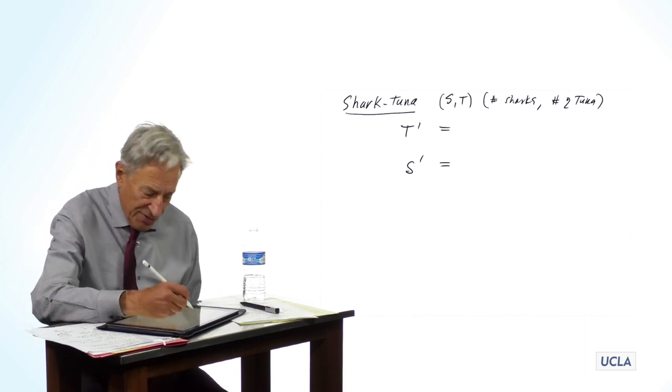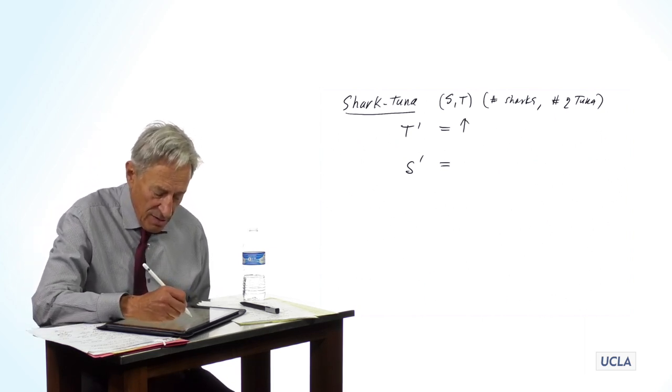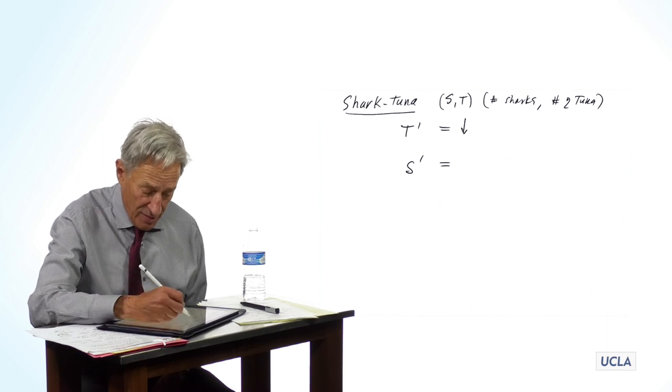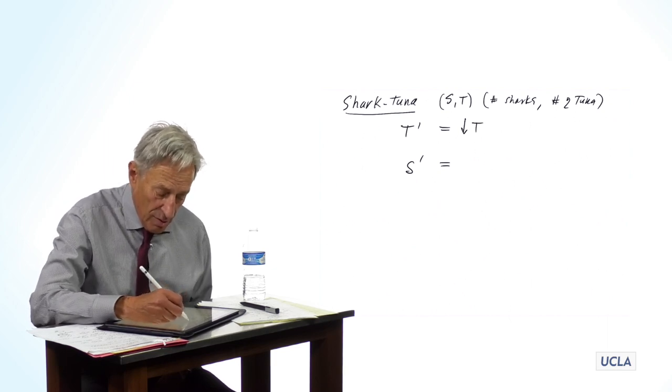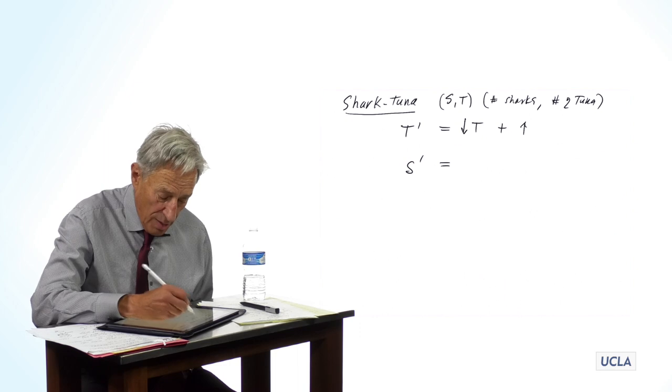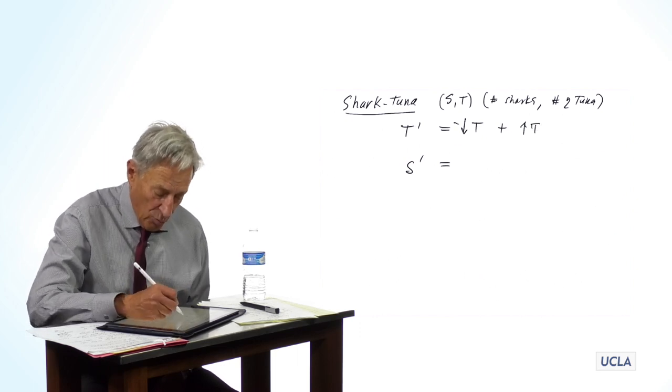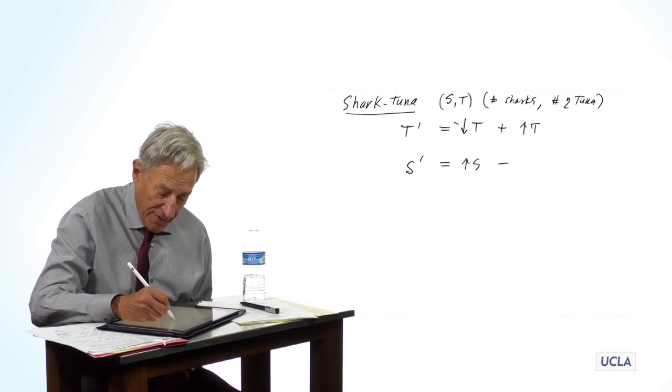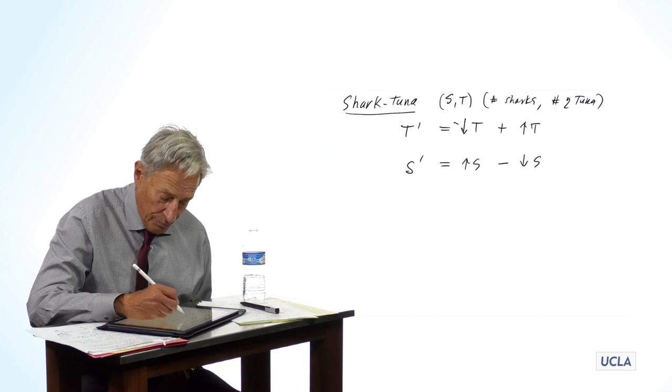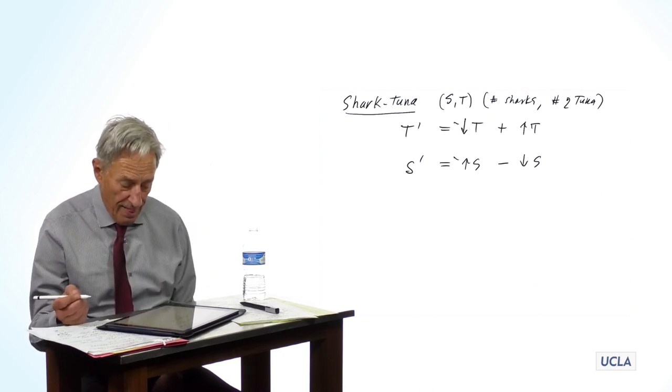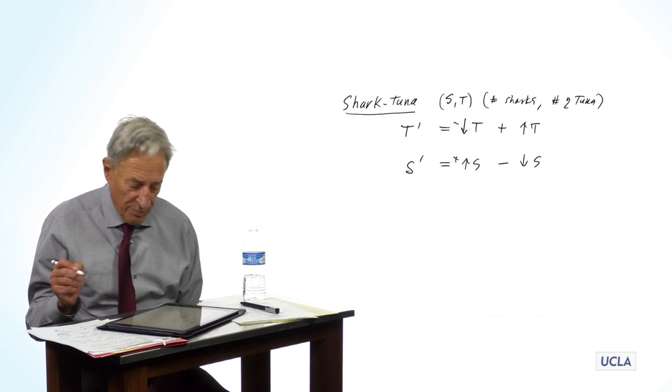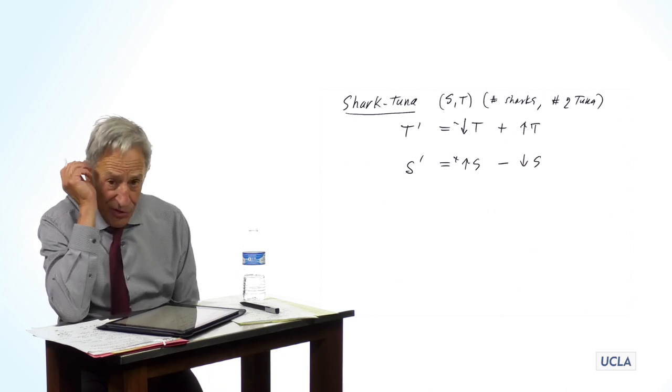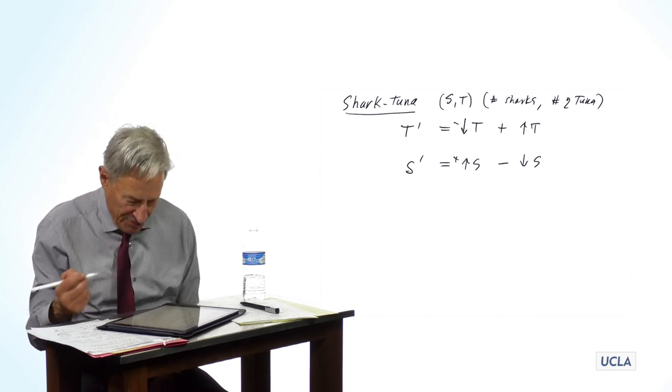And so we follow the procedure and we write down T prime and S prime. And we put little equal signs here. And now we ask, what makes T go up? Or actually, the first thing I'm going to do is what makes T go down plus what makes T go up? And then what makes sharks go up and what makes sharks go down? What makes sharks go up minus what makes sharks go down?